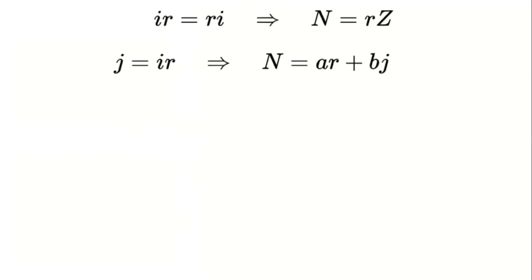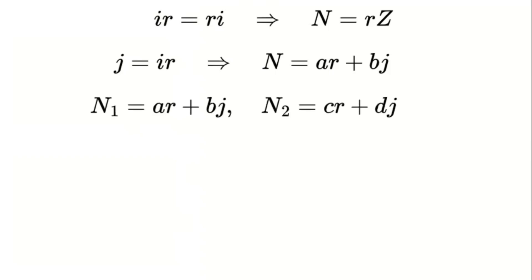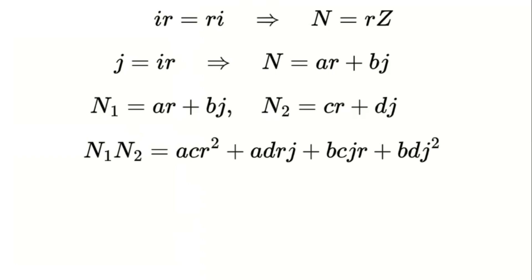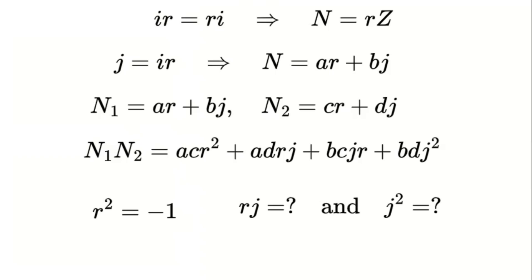Let's multiply two such numbers. Let's call the first one n1 equal to a times r plus b times j, and the second one n2 equal to c times r plus d times j. When we multiply them, we get a times c times r squared, plus a times d times r times j, plus b times c times j times r, plus b times d times j squared. Now we know that r squared equals negative 1, but what about r times j and j squared? We need to figure those out.